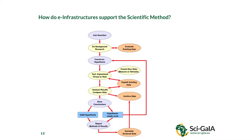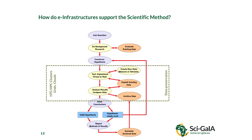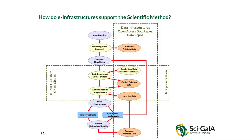This is the scientific method again — a more complicated view — showing that e-infrastructures are very important in supporting it. For data analysis, high-performance computing infrastructure — clusters, clouds, grids — are very important, as is data preservation for subsequent reanalysis. Data infrastructure, a combination of document repositories and data repositories, is very important because with it you can access not only your own data, but everybody else's data to reuse, to reproduce science, and to tackle more complex problems.